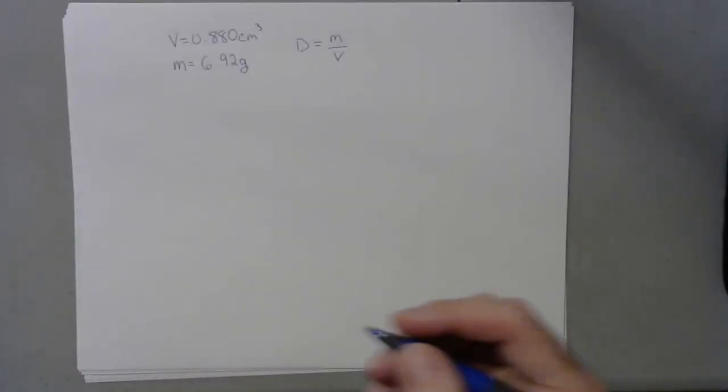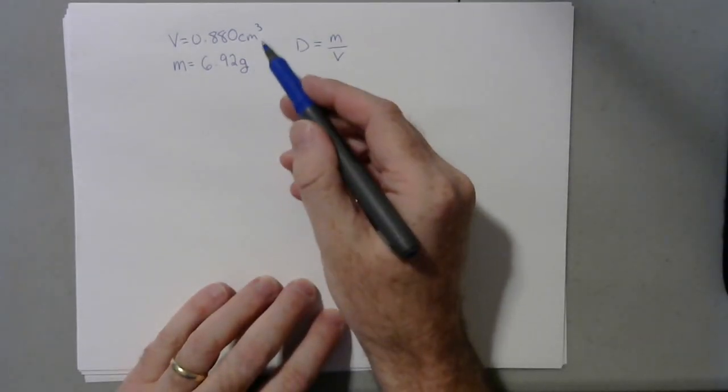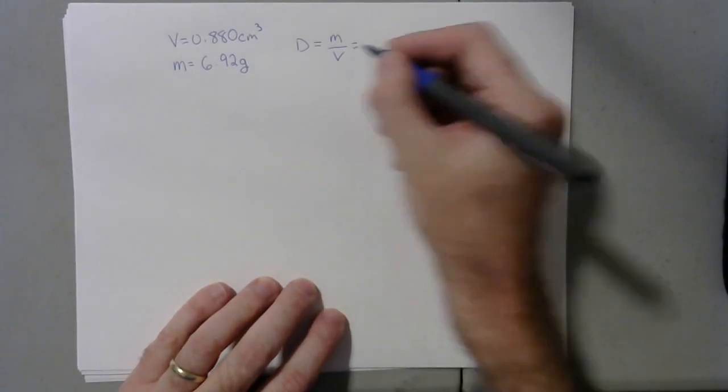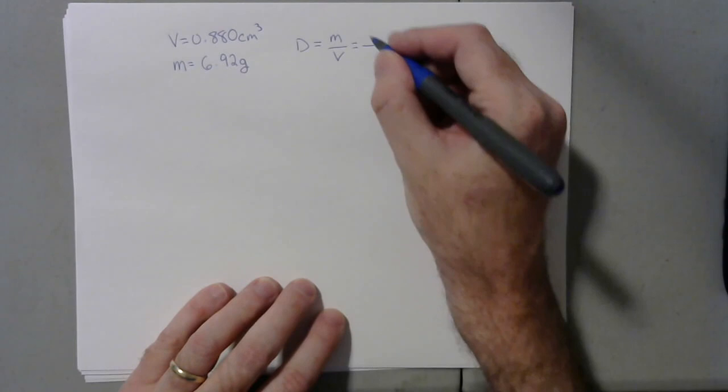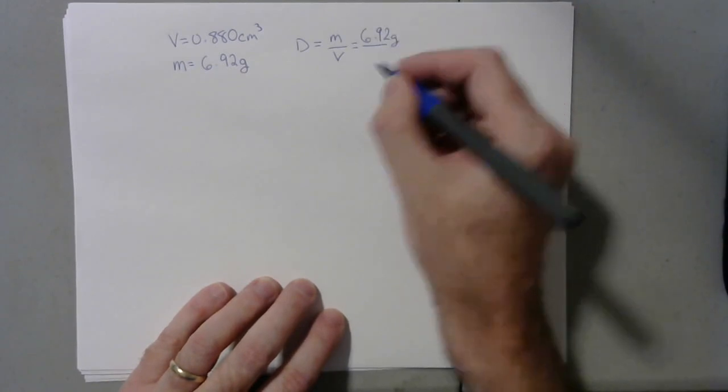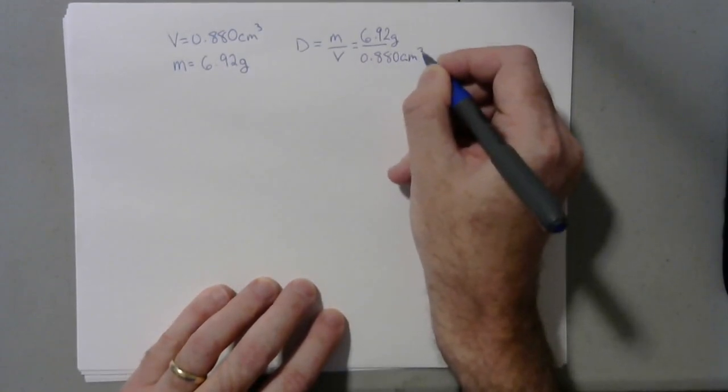So working this problem out, we can see that we pulled these numbers from the problem, the volume and the mass. And so it's just a simple matter of plugging in the number 6.92 grams and 0.880 centimeters cubed.